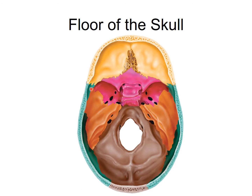This bone here looks sort of like a bat's wing — it's called the sphenoid bone. The sphenoid bone has a feature here called the sella turcica. It literally means Turkish saddle. It has a depression here, and this is where your pituitary gland sits. We'll talk about your pituitary gland once we get to the endocrine system.